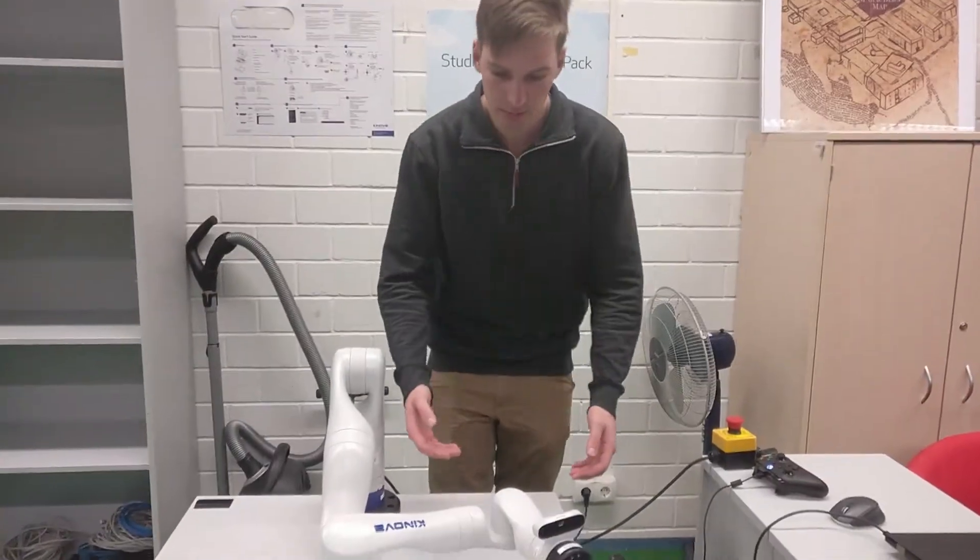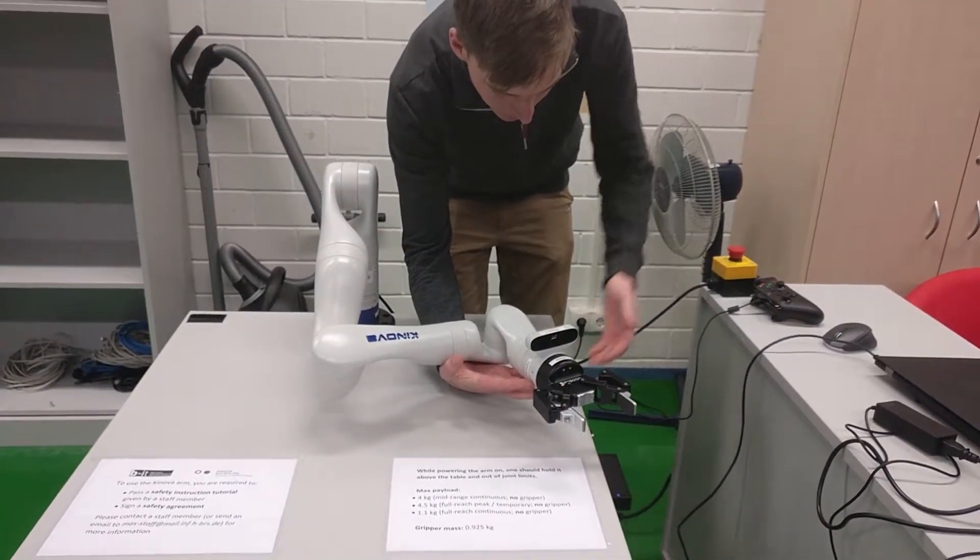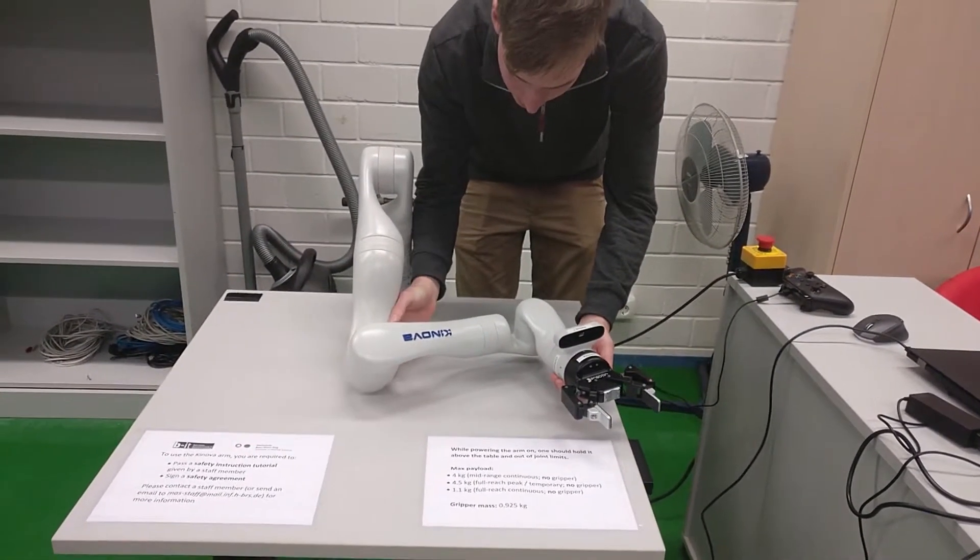So to power up the robotic arm, support it and then press the emergency stop button. Then slowly drop it down to the table.